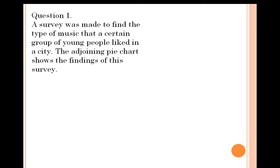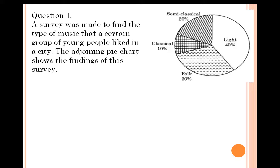A survey was made to find the type of music that a certain group of young people liked in a city. The adjoining pie chart shows the findings of this survey. From this pie chart we can easily say that 40% of people like light music, 20% like semi-classical, 10% like classical, and 30% like folk. So there are more people who like light music, and only 10% — the least number — like classical music.